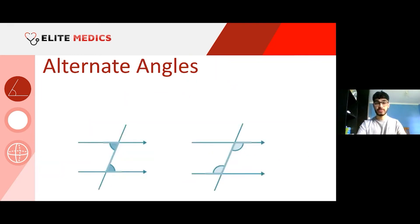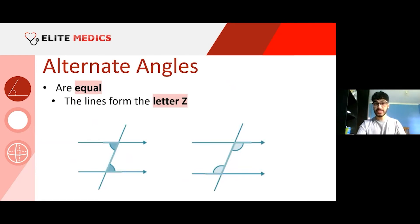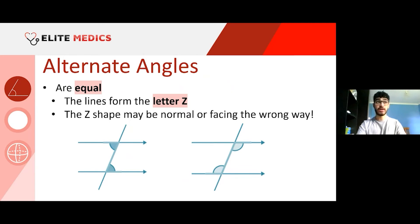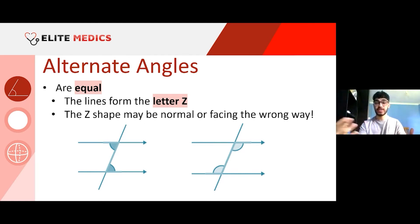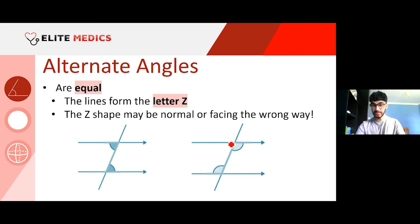Alternate angles are also equal, and the lines form the letter Z. Similar to corresponding angles, we remember the name by the Z shape. The Z may be normal or facing the wrong way. Because angles on a straight line are 180 degrees, we can get from one orientation to the other.